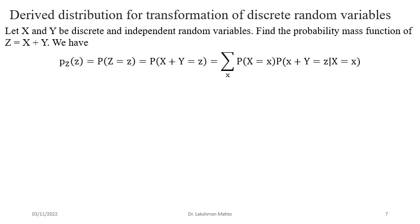From the definition of PMF, p_Z(z) = P(Z = z) = P(X + Y = z). Here z is fixed. What does X + Y = z represent geometrically? X varies along the horizontal axis and Y along the vertical axis. So X + Y = z is a straight line in the XY plane. To find the distribution of Z, we are confined to observing joint variation of X and Y along this line only.